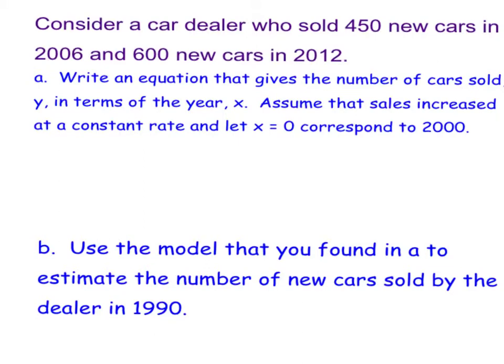Let's do one application problem. With application problems, you're either going to be given the slope and the y-intercept, the slope and a point, or two points. In this case, we're not given a rate, so we're not given the slope. But what we are told is that there are 450 cars in 2006 and 600 in 2012. To me, that looks like two data points. It's really important that we notice that 0 corresponds to the year 2000. So if 2000 is 0, 2006 must be 6, and there are 450 cars sold.